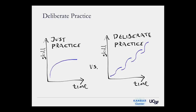If you just practice over time you develop skills but then it levels out, whereas if you practice through a deliberate practice model you get better and better over time. Sometimes you actually see a slight downhill in that curve, which is a very interesting phenomenon.